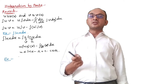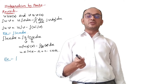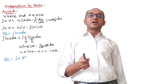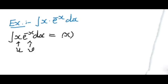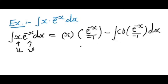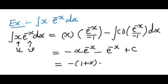Let us take another example: the integral of x·e^(−x) dx. We assume x as u and e^(−x) as v. Then by applying the rule of integration by parts, you can show that the integral of x·e^(−x) dx is −(x + 1)·e^(−x) plus an arbitrary constant, where the constant is a real number.